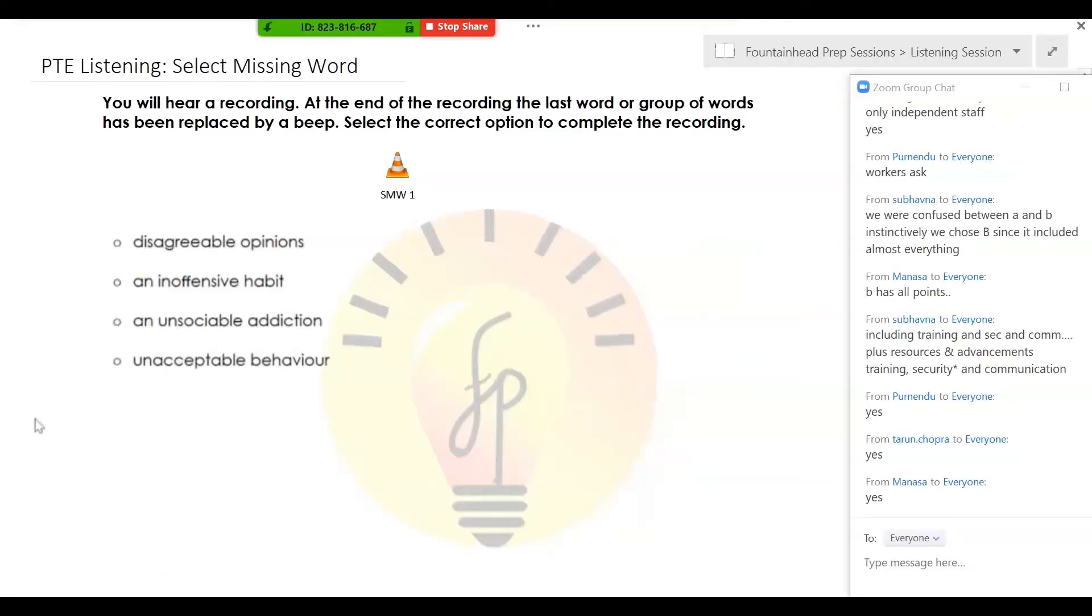This one is select missing words. You will listen to a recording. At the end of the recording, the last word or group of words has been replaced by a beep. You select the correct option to complete the recording. It's very important that you understand the context of the lecture. It's going to be a very short audio, 30 to 40 seconds.